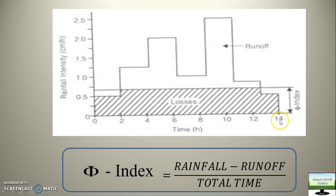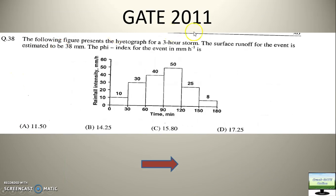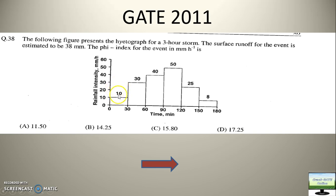That total time is 14 hours. I hope you are clear till now. Based on our understanding of phi index, now we will calculate one question — see this 2011 question. I would recommend you to use pen, paper, and a calculator. Pause this video and read the question carefully. From this question, to calculate the phi index, what will be the total rainfall? You have to calculate the area under the curve. For 10 mm per hour for 30 minutes — intensity multiplied by time — 10 into half an hour equals 5.